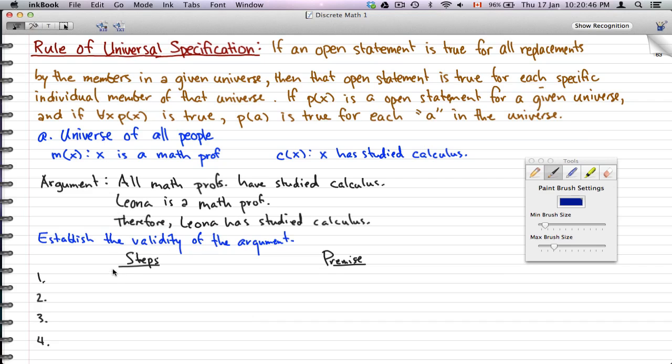So we're trying to establish the validity of this argument. The first statement here, all math profs have studied calculus. What we're trying to do is for all x, mx is a math prof, that implies cx that they have studied calculus. And this is given, so we just write premise.